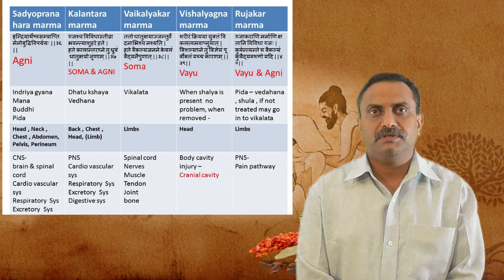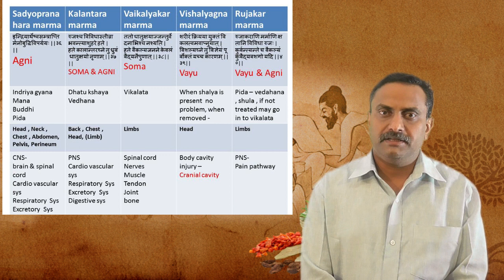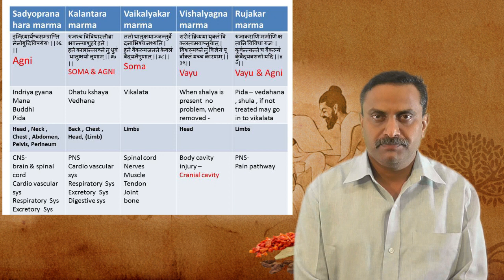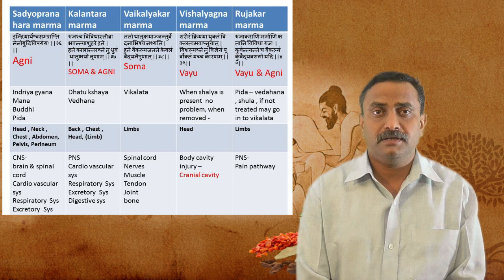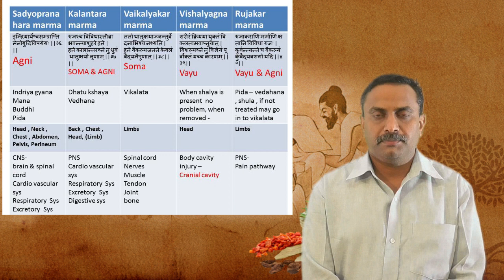Kalantara Pranahara Marma has Soma and Agni Guna as the predominant Panchamahabhutas. If injured, the person will survive up to 15 to 30 days due to Soma Guna, but thereafter will die if untreated. Injury causes Datukshaya and Vedana. Approximately 90% of Kalantara Pranahara Marmas are present in the back (Prushtagata Marmas) and chest, with a few in the head region.